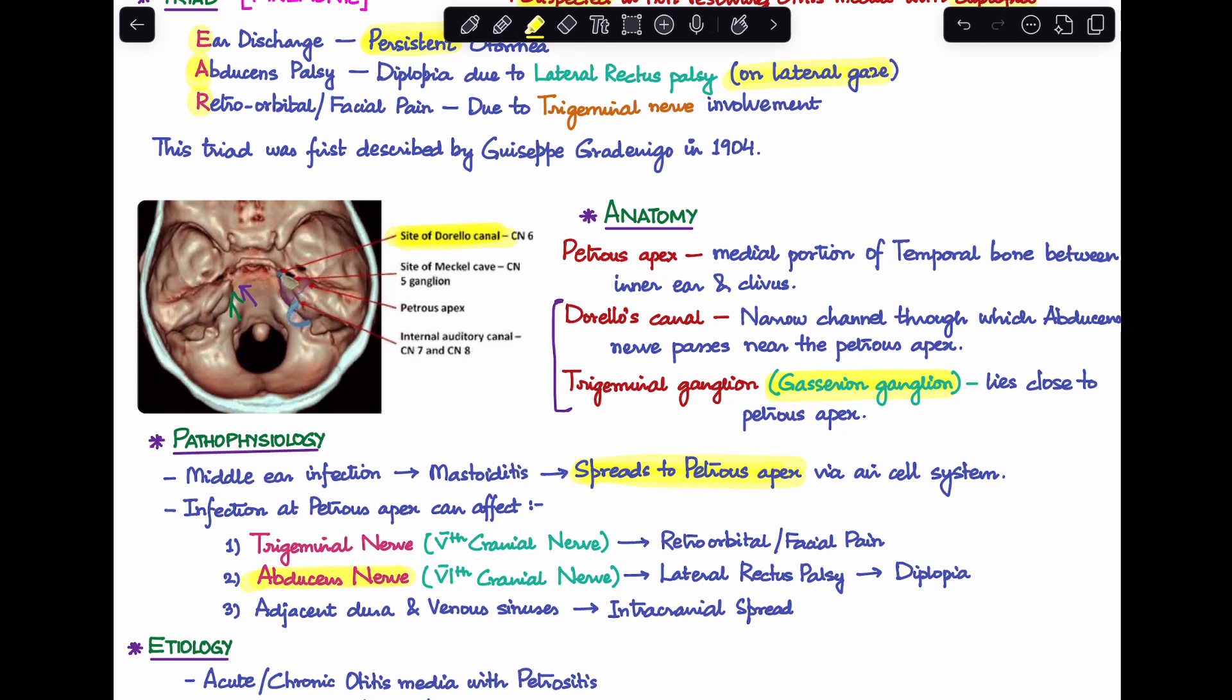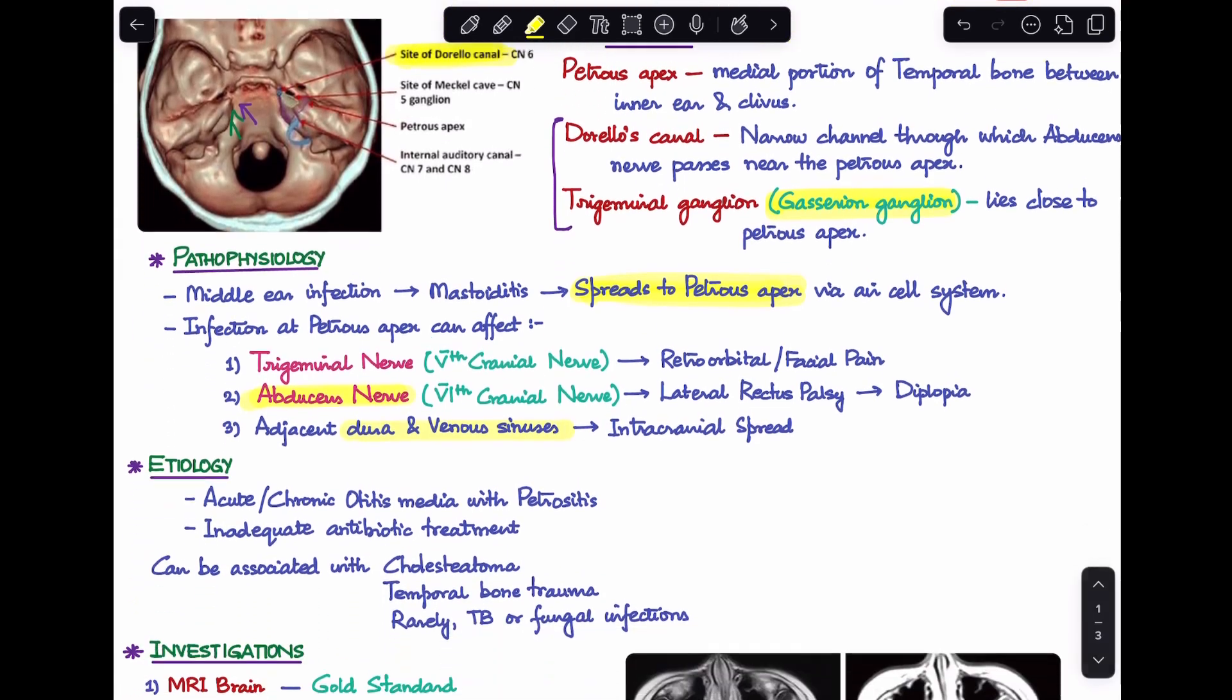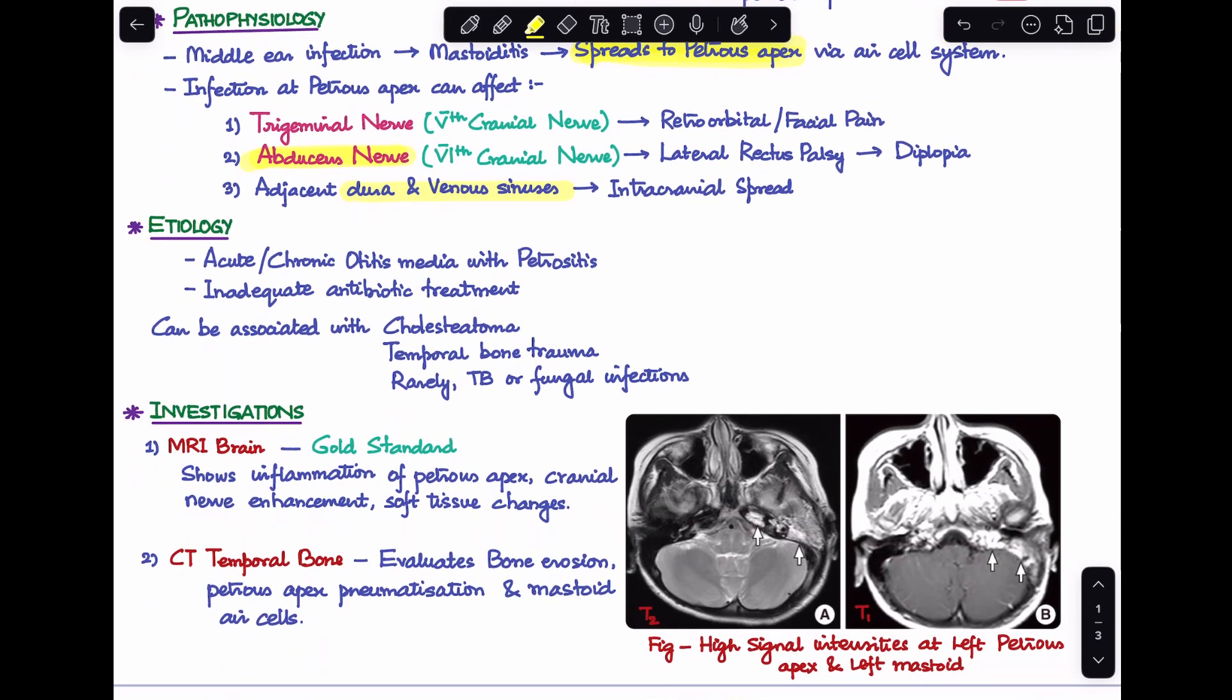Coming to etiology, this is usually a complication of acute or chronic otitis media with petrositis. This can happen because of inadequate antibiotic treatment which leads to the fact that the infection doesn't get treated properly. Gradenigo's syndrome is also associated with cholesteatoma, temporal bone trauma, rarely tuberculosis or fungal infections as well.